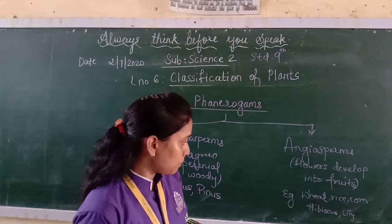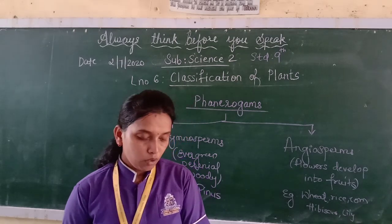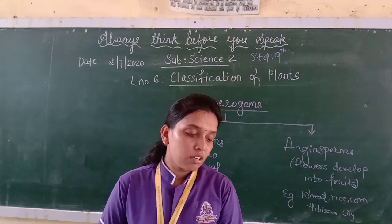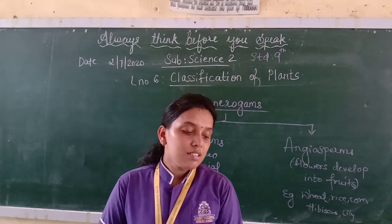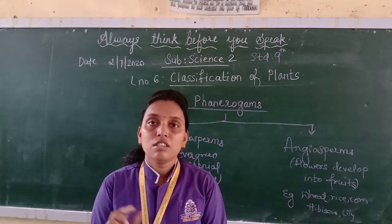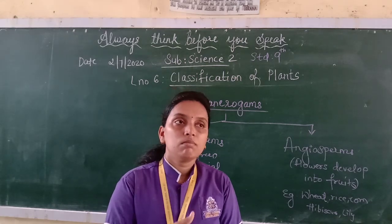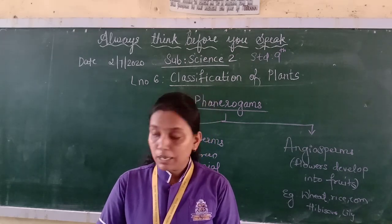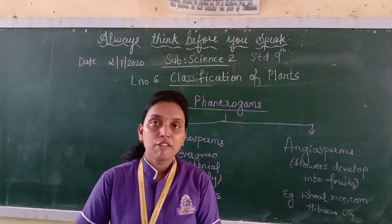Examples of angiosperms include wheat, rice, and corn. On page number 79, a comparison between dicotyledonous and monocotyledonous plants is given. Dicotyledonous seeds have two cotyledons, while monocotyledonous seeds have only a single cotyledon and cannot be broken into two parts. Dicotyledonous plants develop a primary (tap) root, whereas monocotyledonous plants have a fibrous root system.